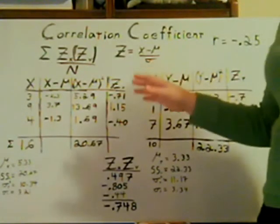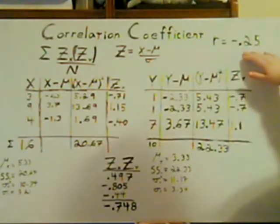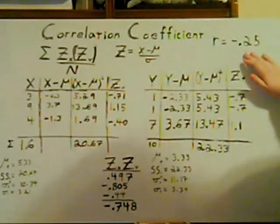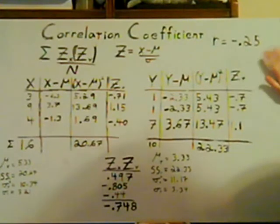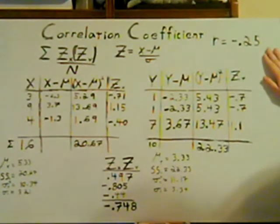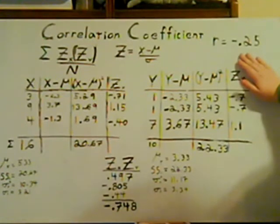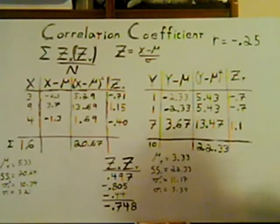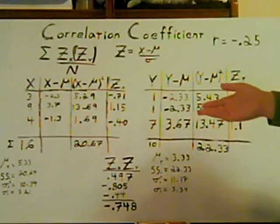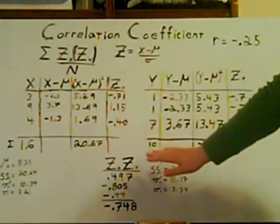Once you've divided by n, you find that your correlation coefficient — or r — is negative .25. This is a non-significant finding, because to be significant we need a .05 or less correlation. And believe it or not, correlation is as easy as that. It's mostly just a lot of math.